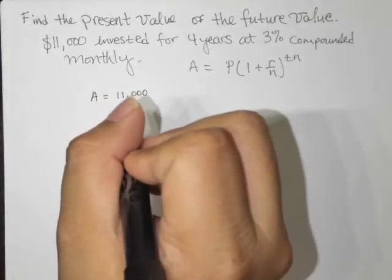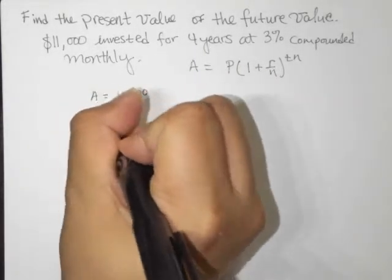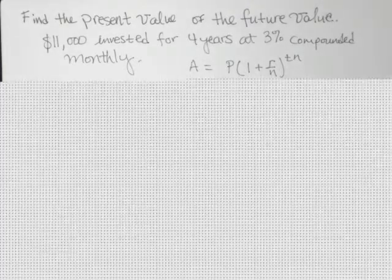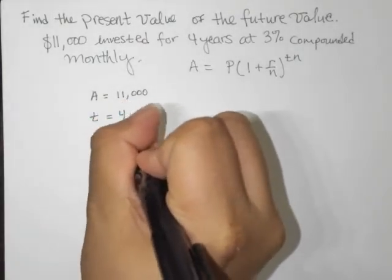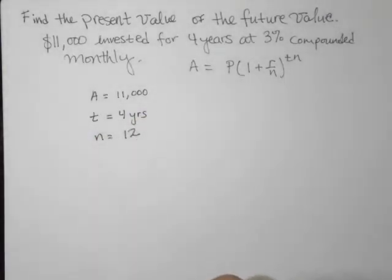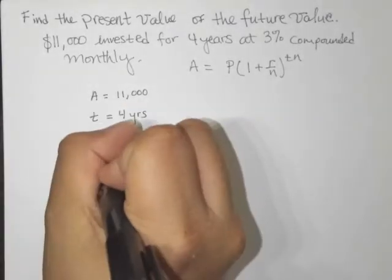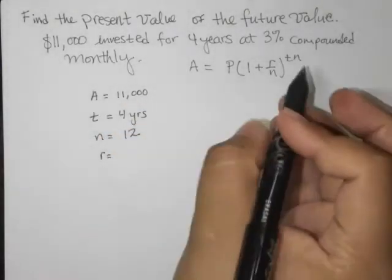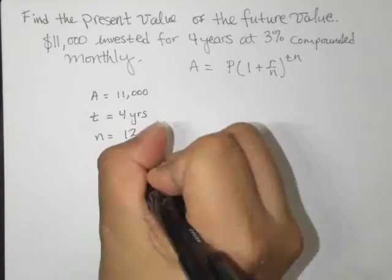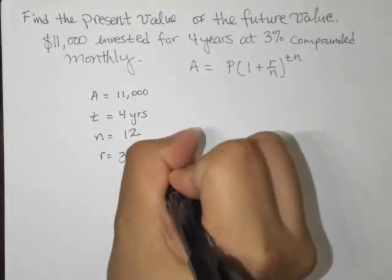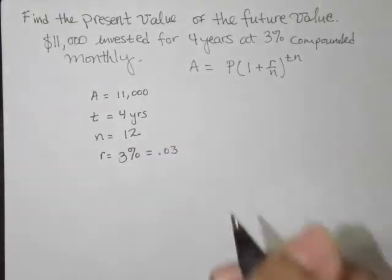And let's see, what else do we know? We know t is over four years, and then n compounded 12 times a year. And at an effective rate of 3%, so we write that as 0.03 as a decimal.